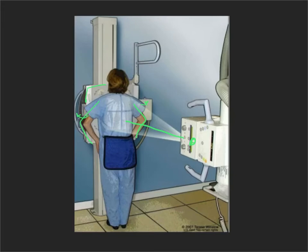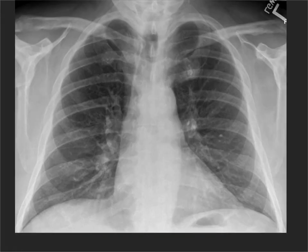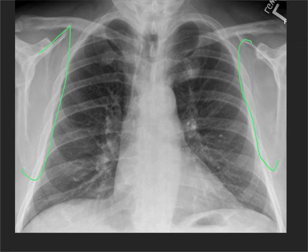A normal PA chest x-ray is taken at 72 inches distance between the x-ray generator and the receptor. You can see on a normal PA chest x-ray how those scapulae, by moving the arms into those positions, have been moved out of the field of view so they're not overlapping the lung tissue.